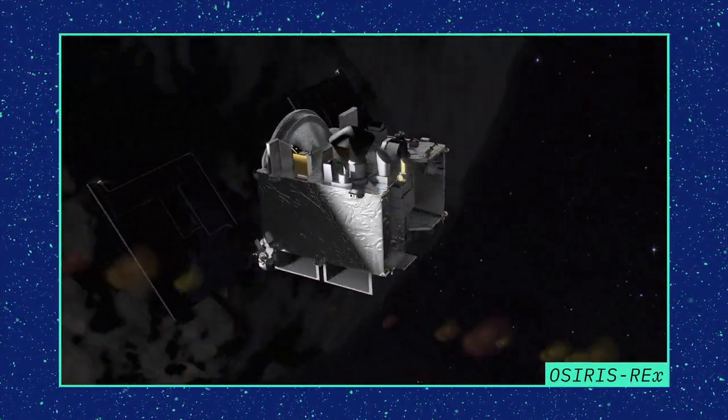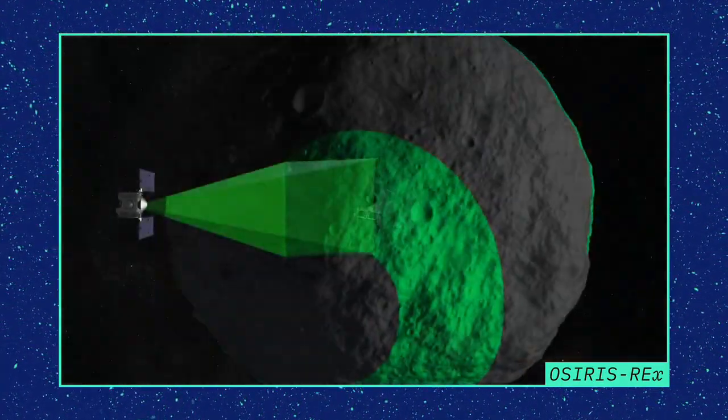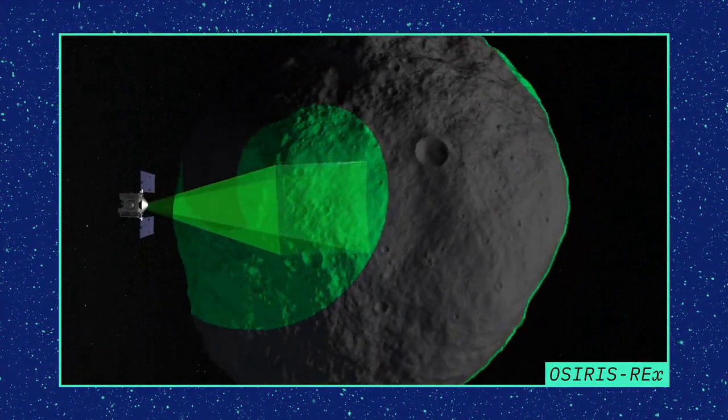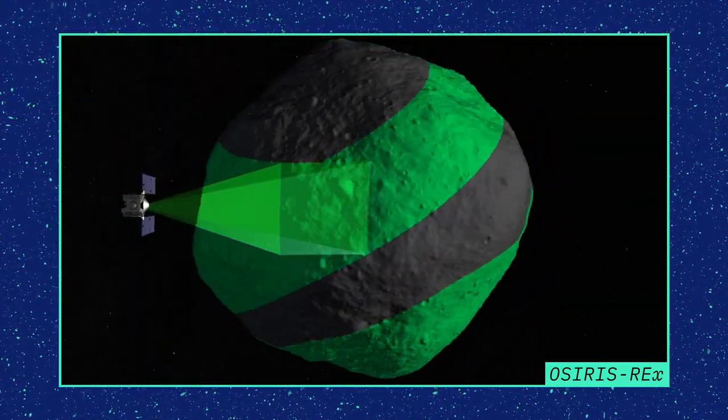That's one reason why NASA sent the OSIRIS-REx spacecraft to study Bennu from 2018 to 2021. OSIRIS-REx greatly improved our knowledge of Bennu's position, density, thermal inertia, and other properties that can influence how its orbit will evolve over time.